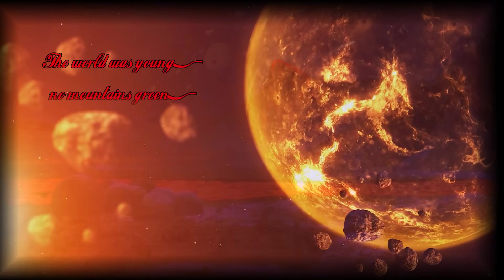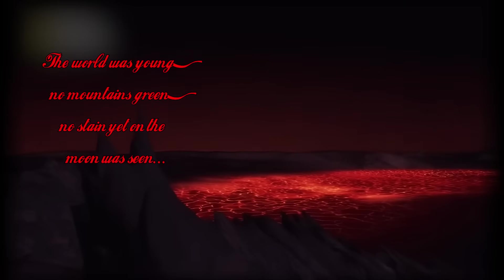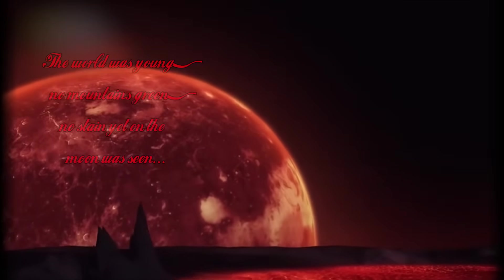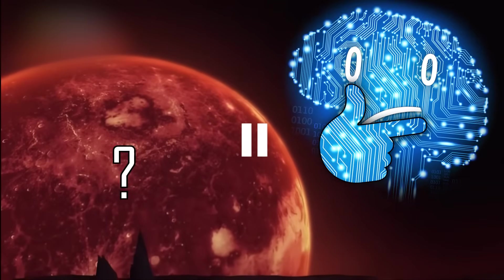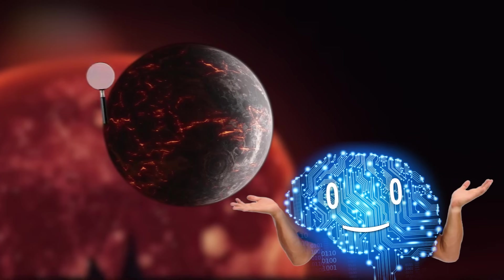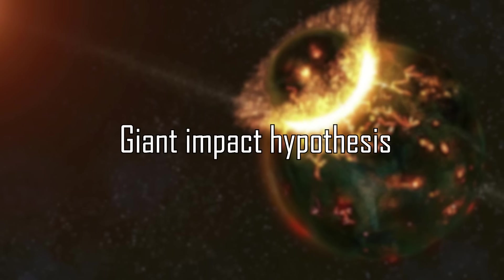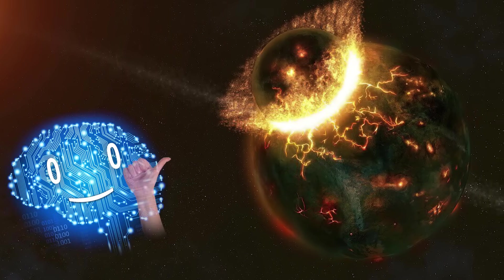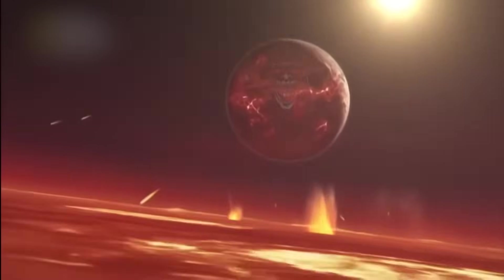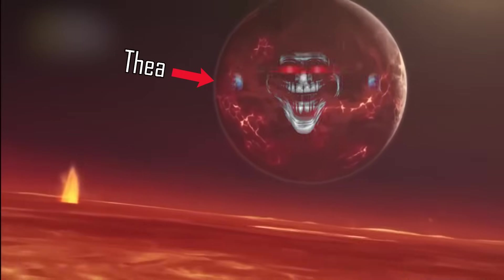The world was young, no mountains green, no stain yet on the Moon was seen. Hold on, where did the Moon come from? It wasn't here a second ago. According to the most popular hypothesis, the giant impact hypothesis, the formation of the Moon would be pretty hard to miss, as a Mars-sized planet named Thea had serious beef with Earth and decided to smash into it headfirst.